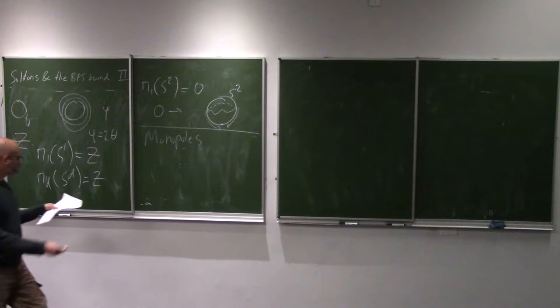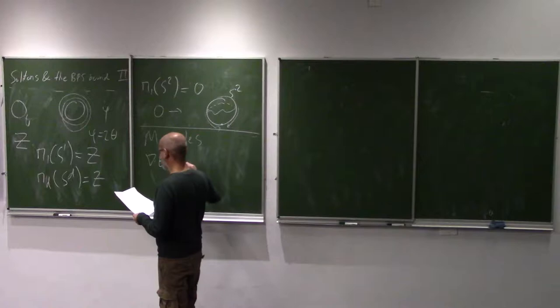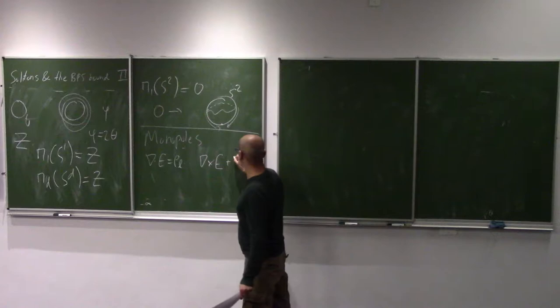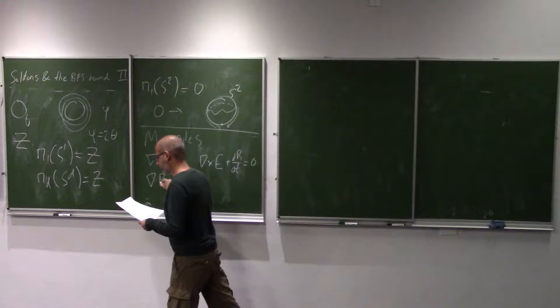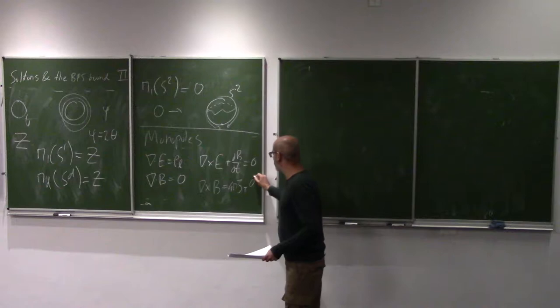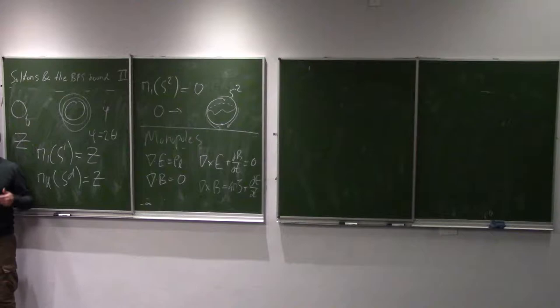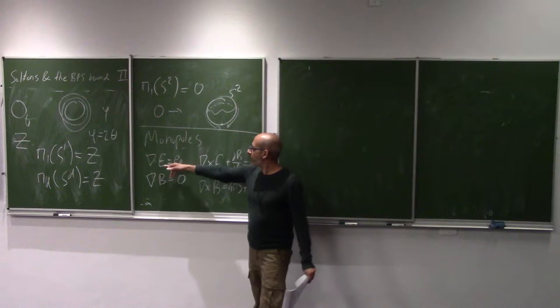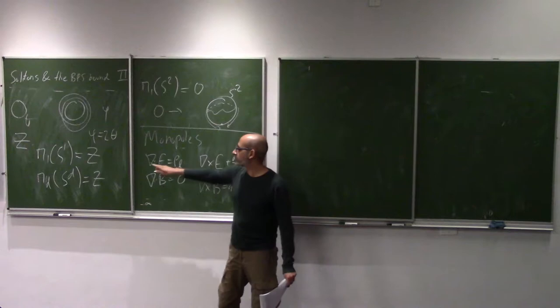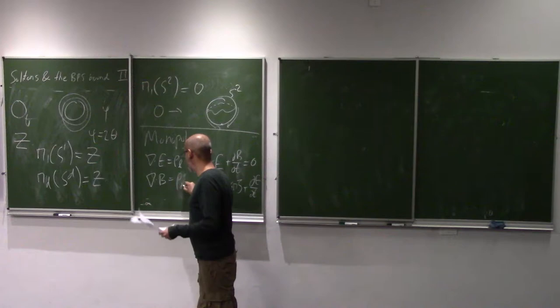A monopole is easy to describe. Remember Maxwell's equations: there's Gauss's law, Faraday's equation, the magnetic Gauss law, and Ampere's law — I've put speed of light and electric constants to one for simplicity. What's a monopole? When I say monopole, I mean the magnetic monopole. The idea was: if we have an electric charge density appearing in Gauss's law, why can't we have an analog of that for the magnetic Maxwell equation? Why not have a magnetic charge density ρ_magnetic satisfying the same kind of equation? Wouldn't the world be more beautiful with this symmetry?